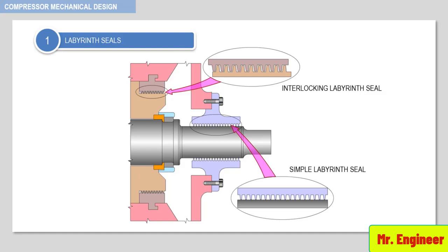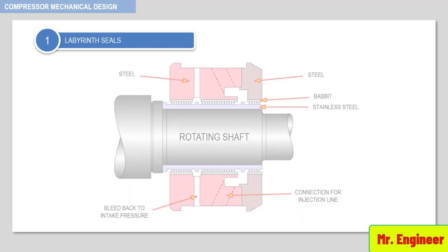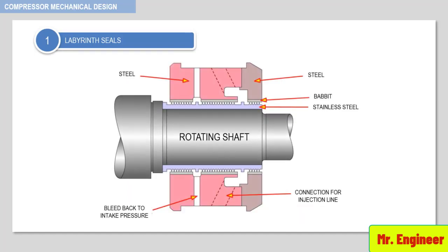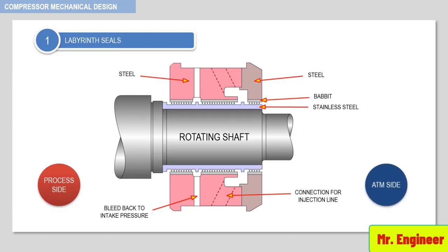Take a look at the following simple labyrinth seal. The left side is the process side — the gas to be sealed — and on the right side, the atmosphere.